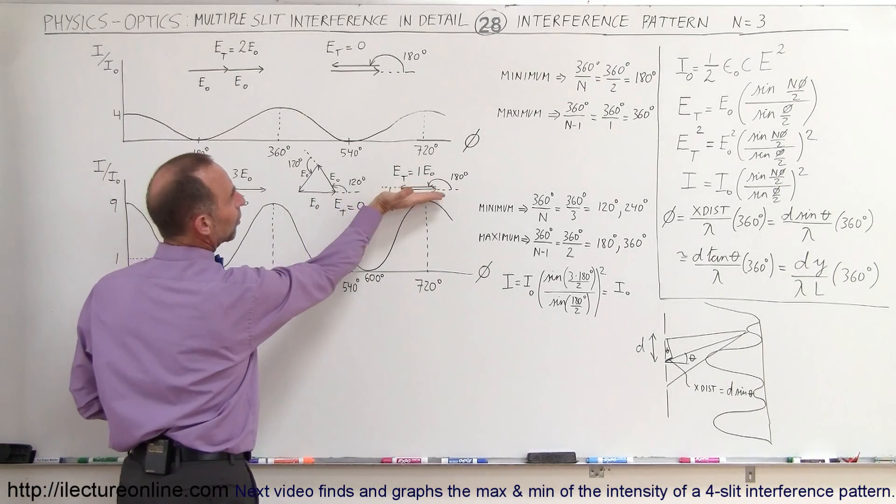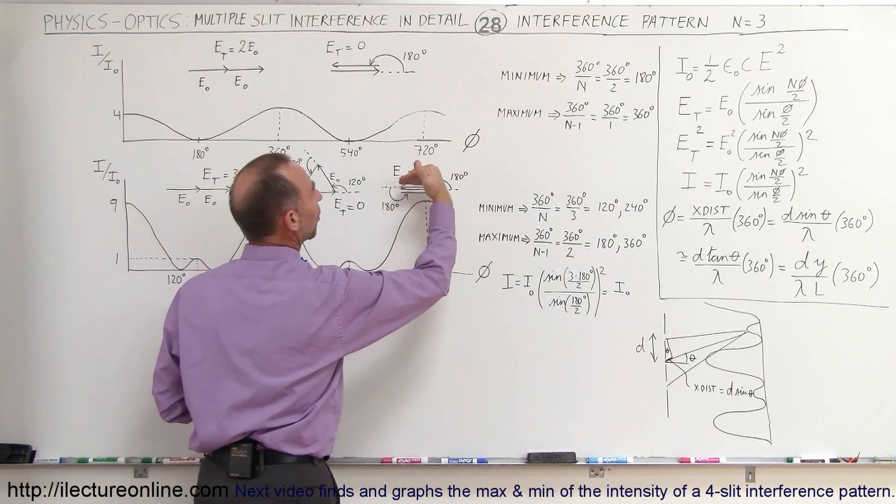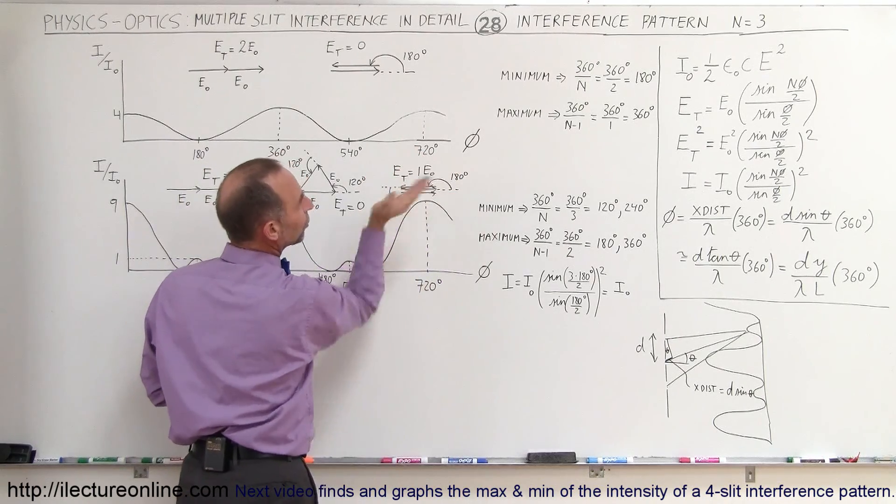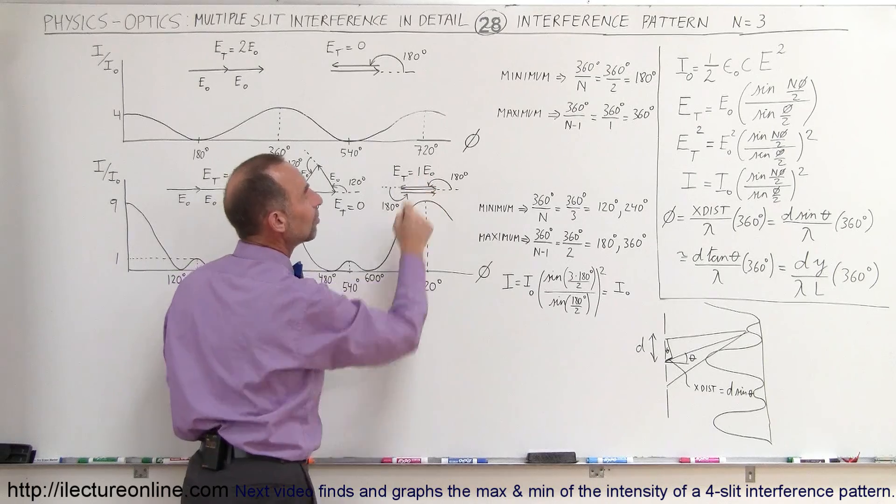notice that the first phasor will point to the right, the second phasor will point to the left, and the third phasor will point to the right again. They add up to one E sub not.